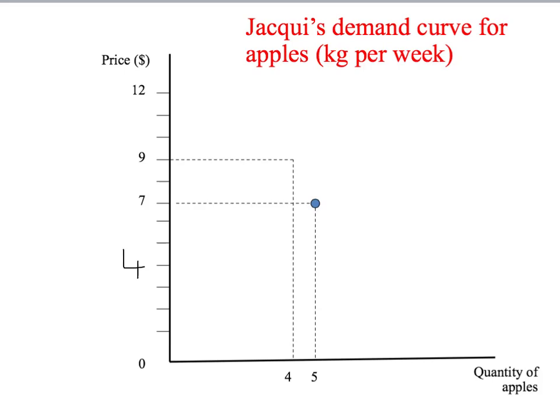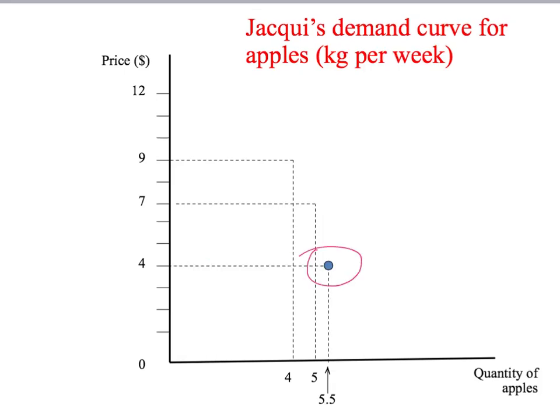Let's ask Jackie another question: suppose the price is only $4 a kilogram for apples. How many kilograms of apples would you like to buy in a week? Jackie might say, '$4 a kilogram is starting to get a really good price. But I like apples, though I can only eat so many in a week. I'll have a few more than if the price was a bit higher, but not that many more.' So Jackie might say she'll have 5.5 kilograms of apples if the price is $4 per kilogram. Here's another point on Jackie's demand curve.